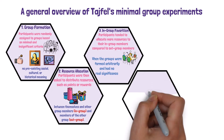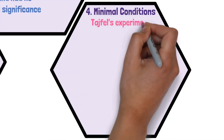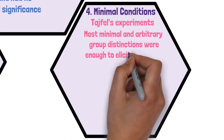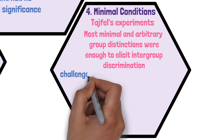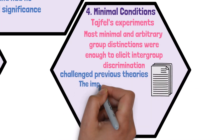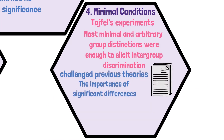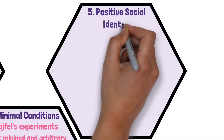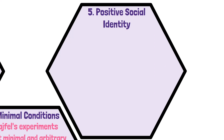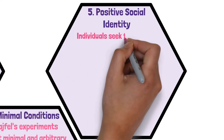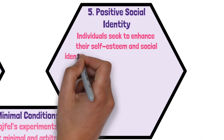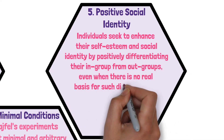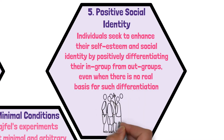Tajfel's experiments demonstrated that even the most minimal and arbitrary group distinctions were sufficient to elicit intergroup discrimination, challenging previous theories that emphasized the need for significant differences between groups for intergroup bias to occur. The findings supported social identity theory's central idea that individuals seek to enhance their self-esteem and social identity by positively differentiating their in-group from out-groups, even when there is no real basis for such differentiation.